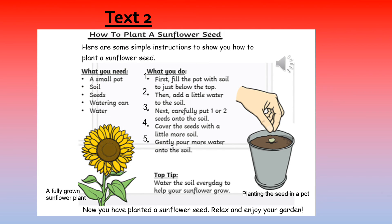Text two: How to plant a sunflower seed. Here are some simple instructions to show you how to plant a sunflower seed. What you need: a small pot, soil, seeds, watering can, water. What you do: one — first, fill the pot with soil to just below the top. Two — then add a little water to the soil. Three — next, carefully put one or two seeds onto the soil. Four — cover the seeds with a little more soil. Five — gently pour more water onto the soil. Now you have planted a sunflower seed — relax and enjoy your garden! Top tip: water the soil every day to help your sunflower grow. Next to the picture of the fully grown sunflower is the caption 'a fully grown sunflower plant.' Next to the picture of the pot is the caption 'planting the seed in a pot.'